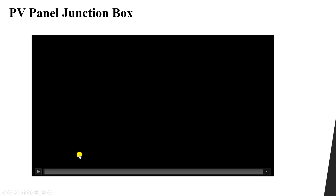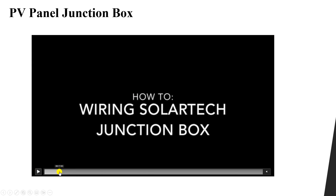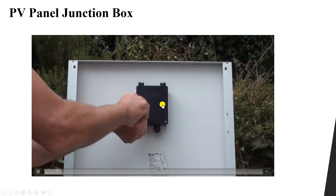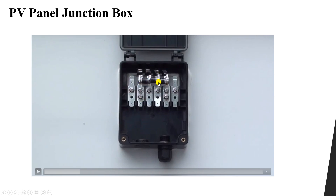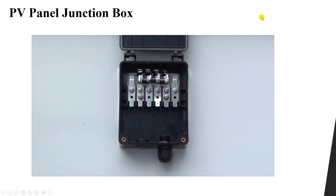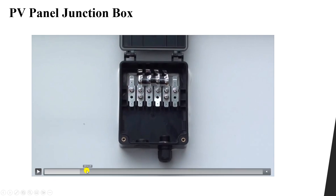Now let's see how a PV panel junction box looks like in practice. If you open the junction box of any PV panel, you will find one, two, and three diodes. You will also find two terminals here and here. This circuit is similar to the one we discussed — three diodes and three strings.